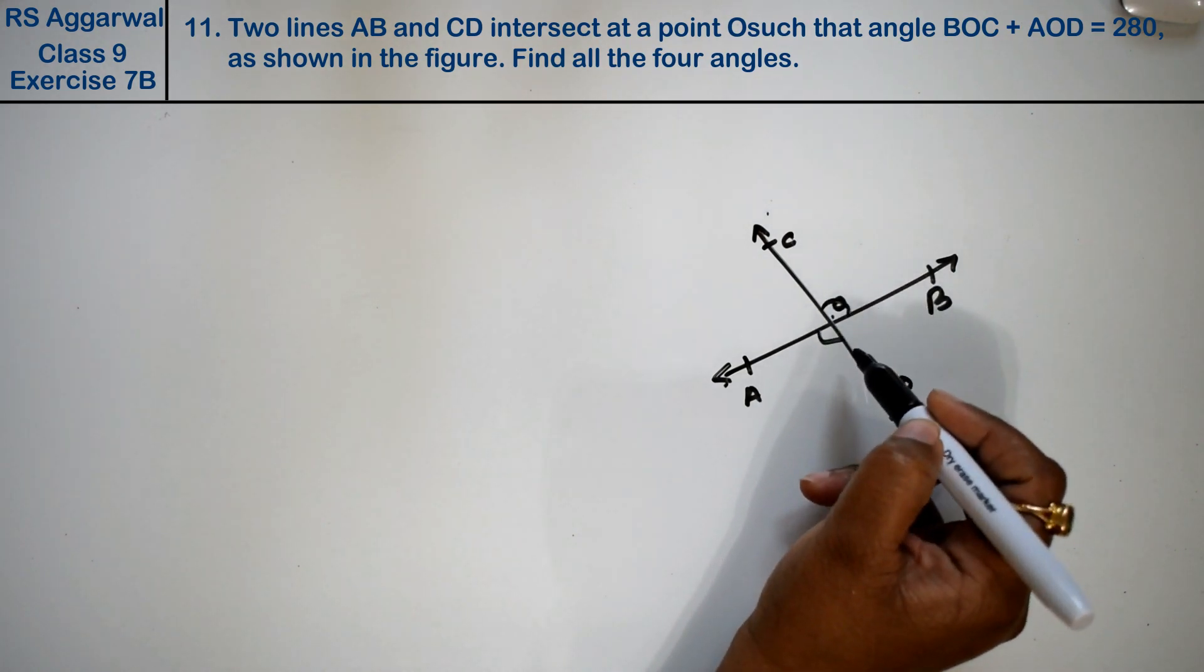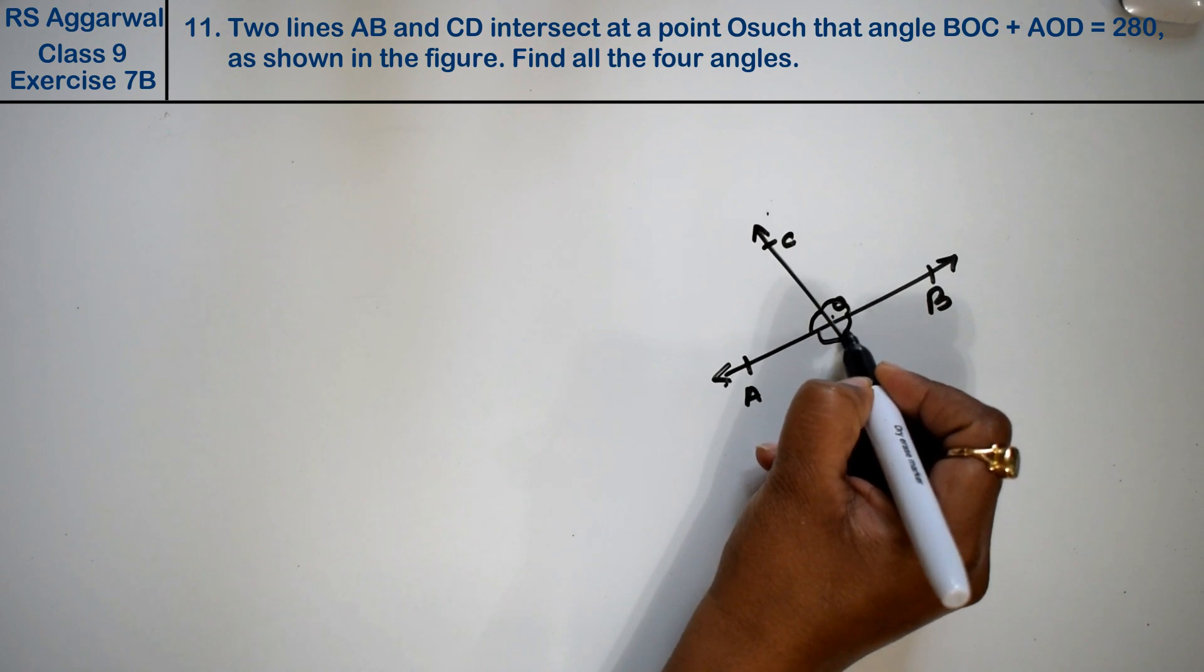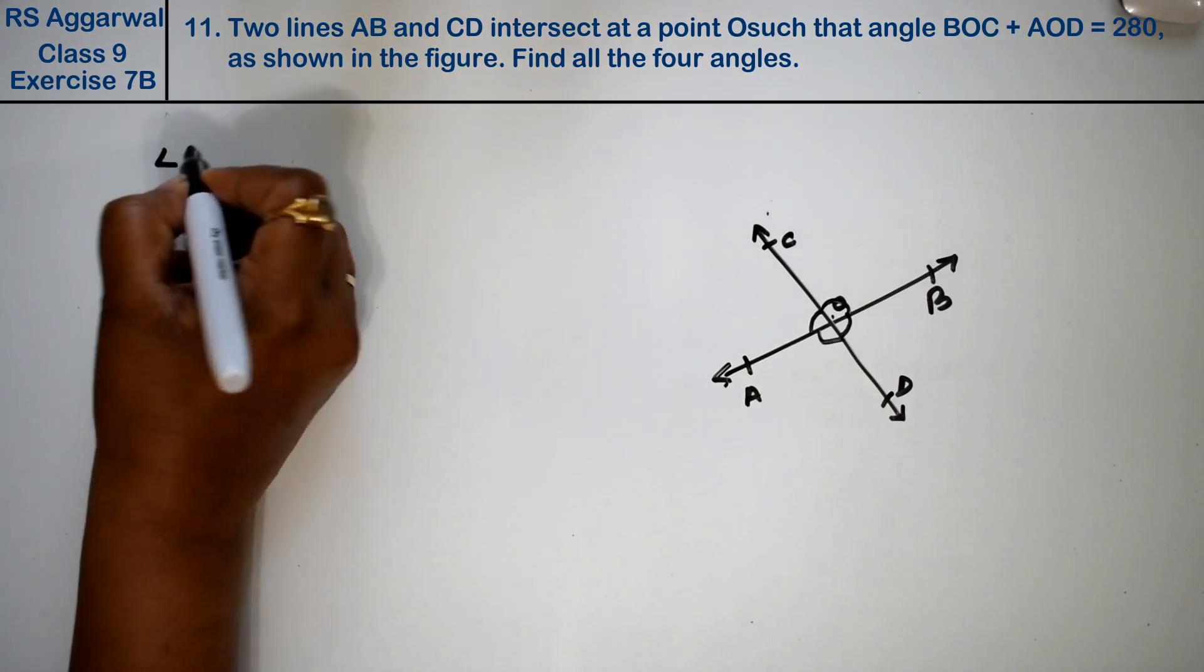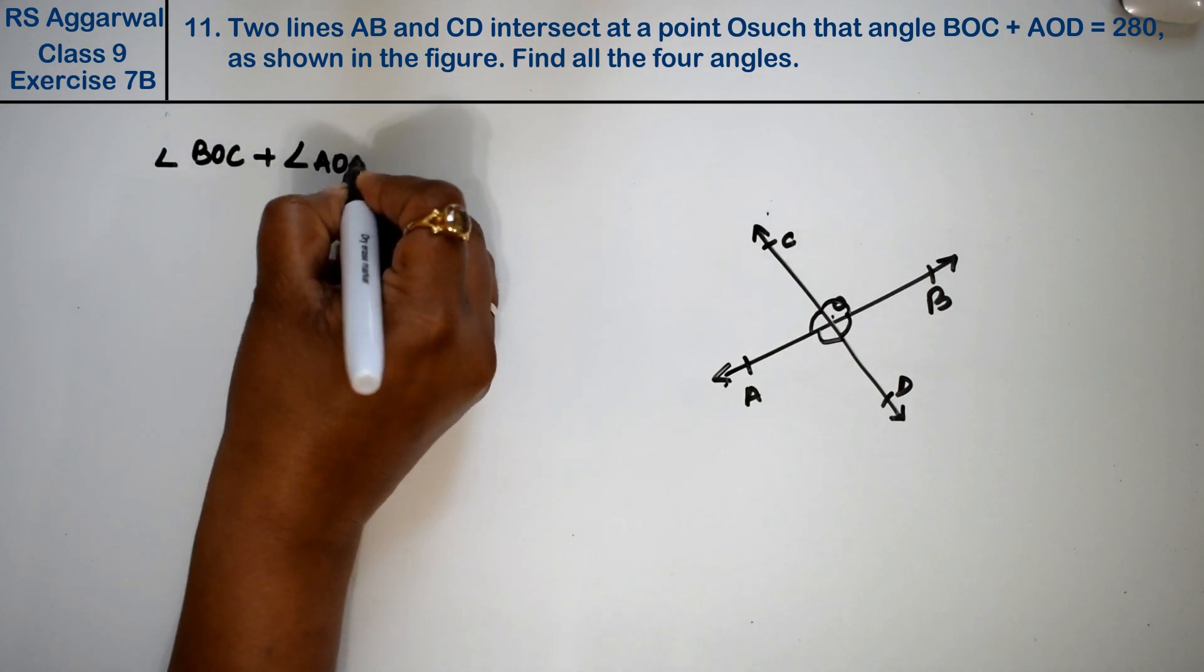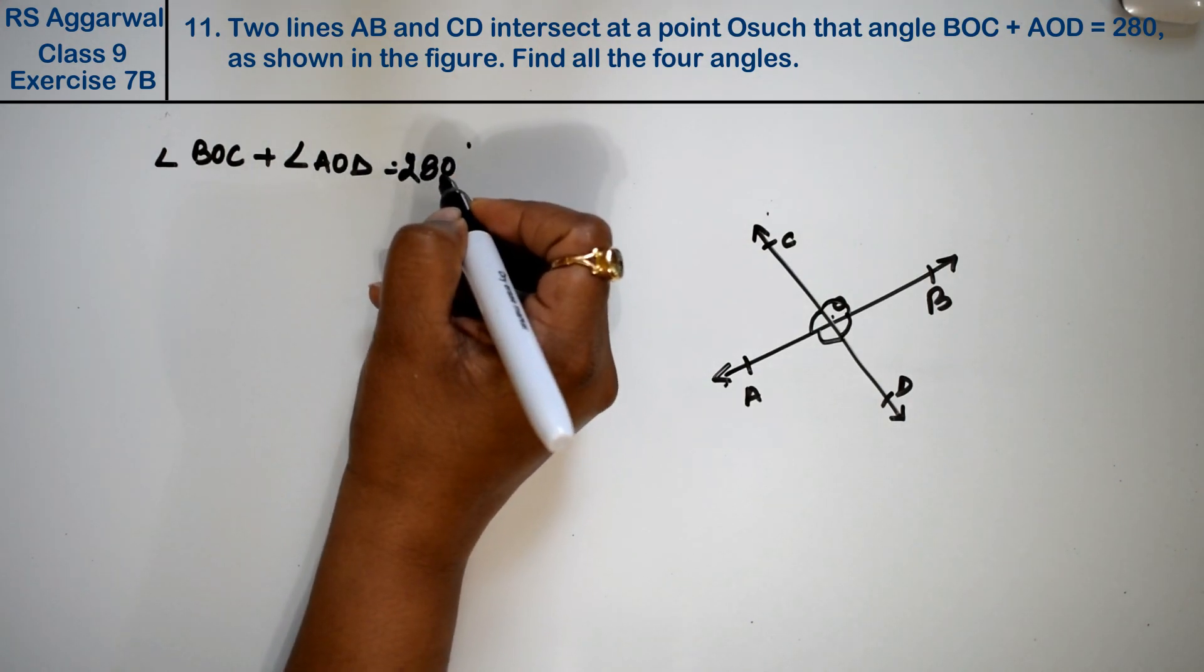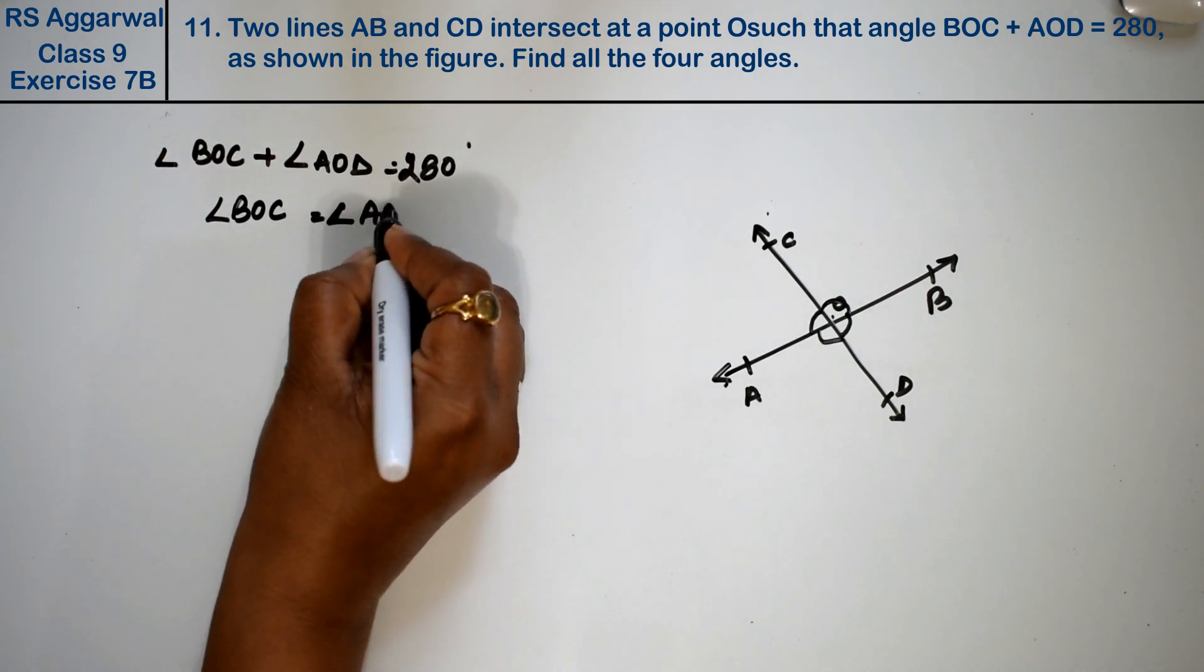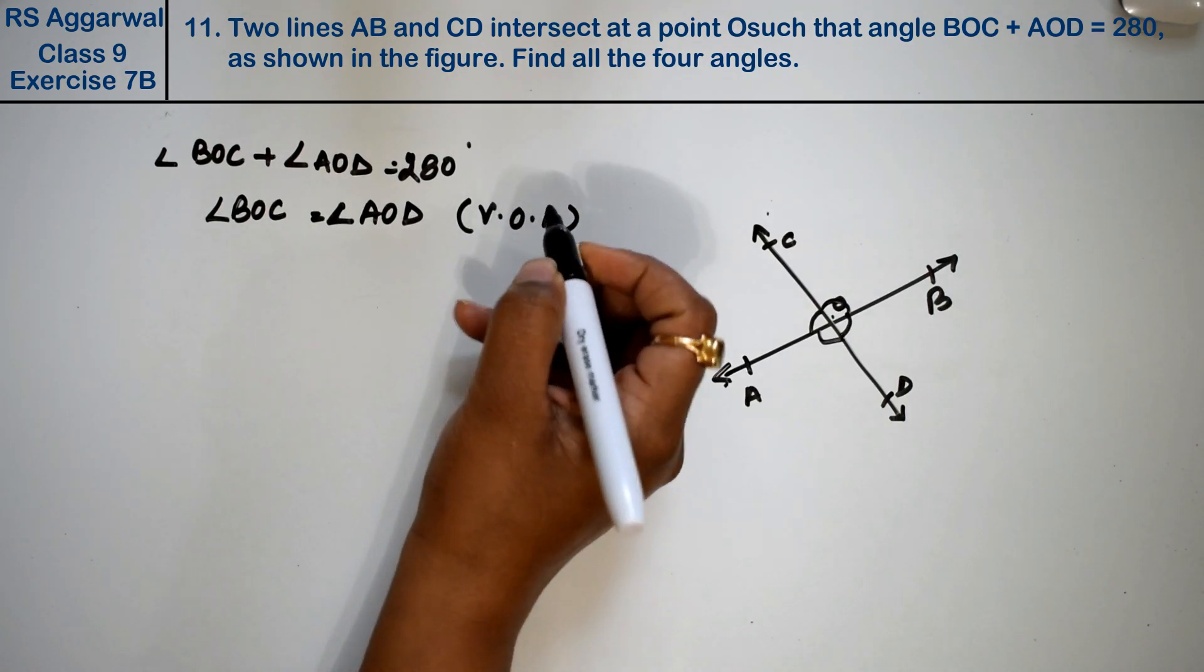Let's take these angles. We know that vertically opposite angles are equal. So angle BOC plus angle AOD equal to 280 degrees. Now, we know that angle BOC is equal to angle AOD because vertically opposite angles are equal.